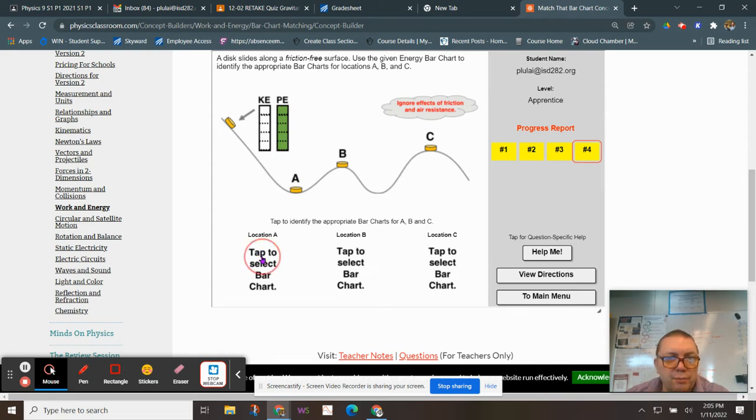Location A here, click on that. And this is lower than here, so there should be less potential energy, and there should be more kinetic energy. This fits that bill, and it does have a total of six bars, or pardon me, of five bars of energy.